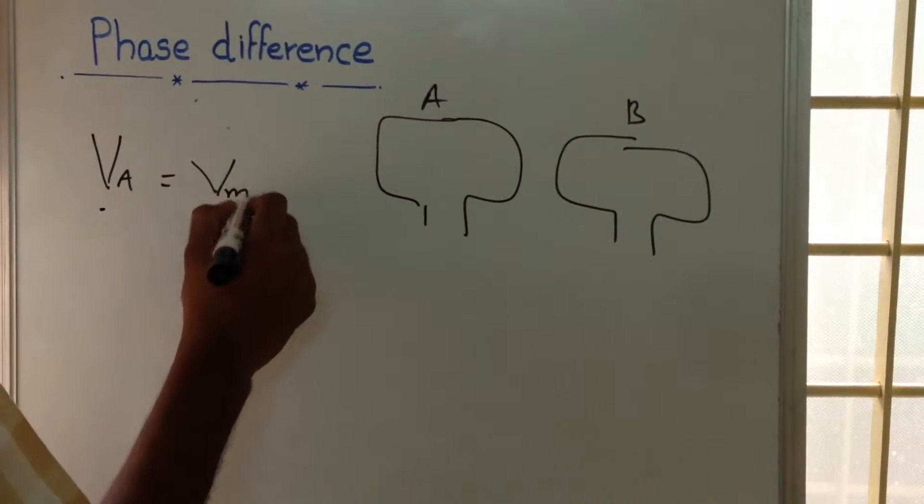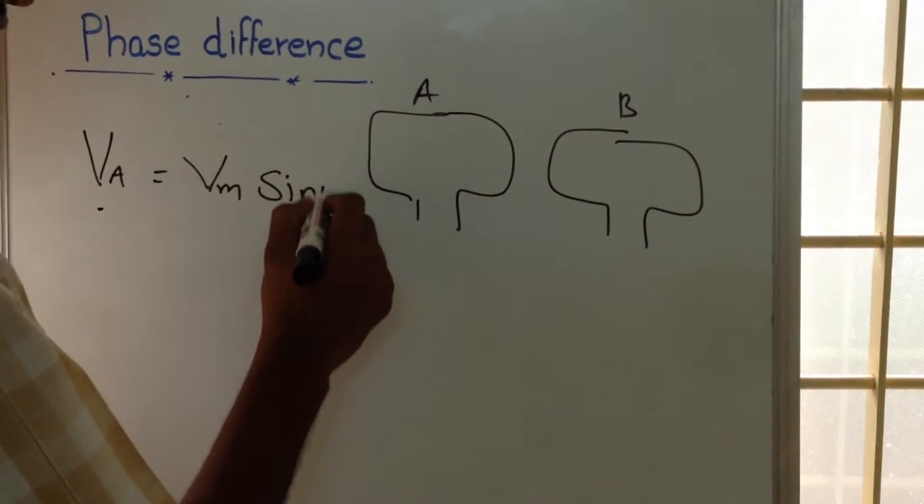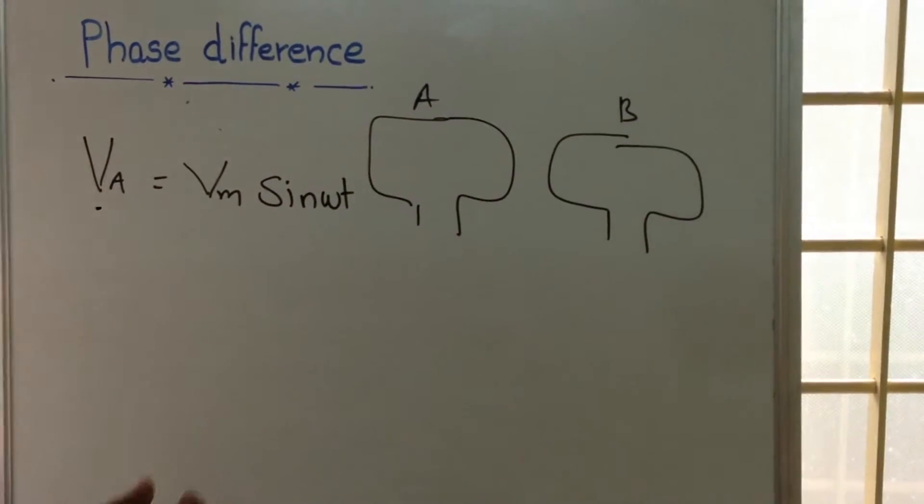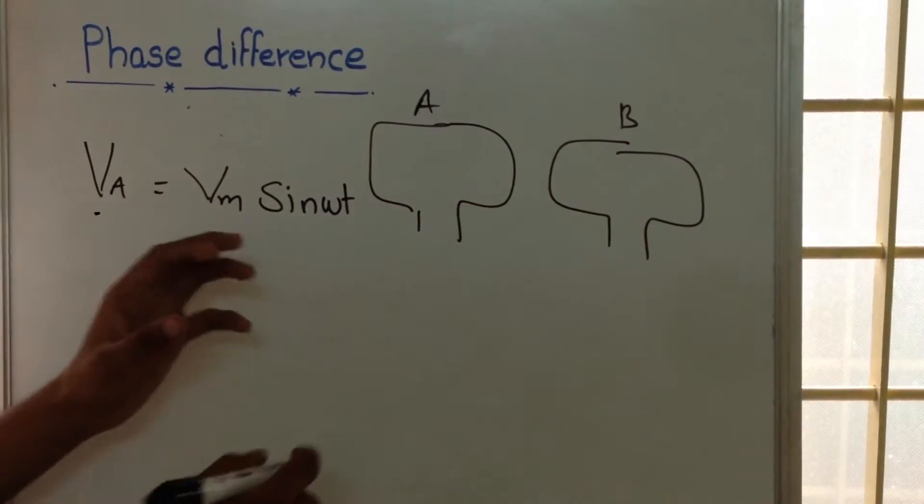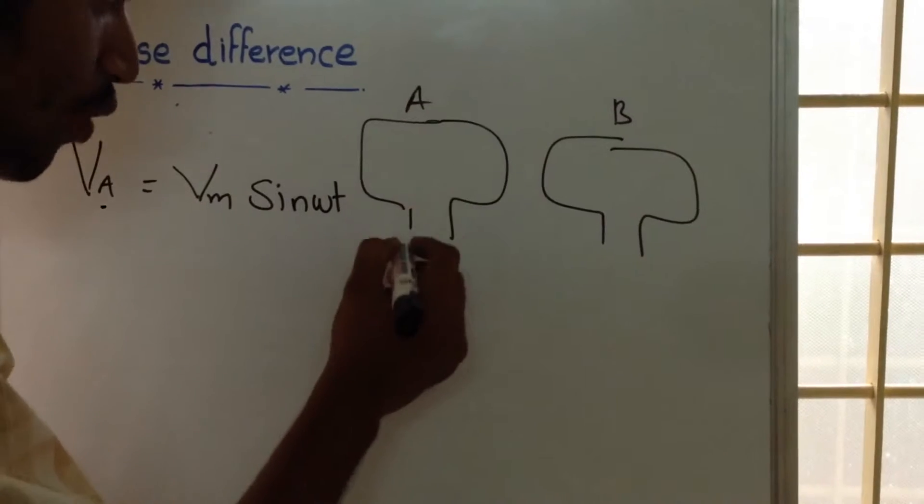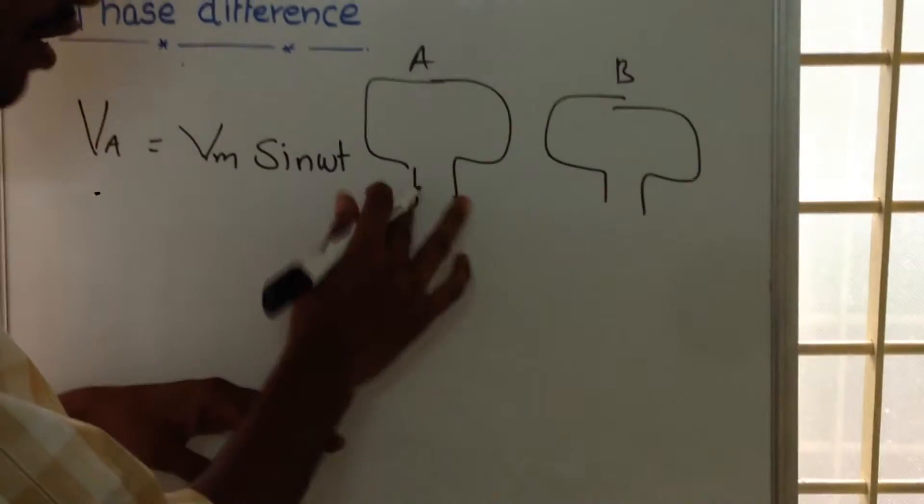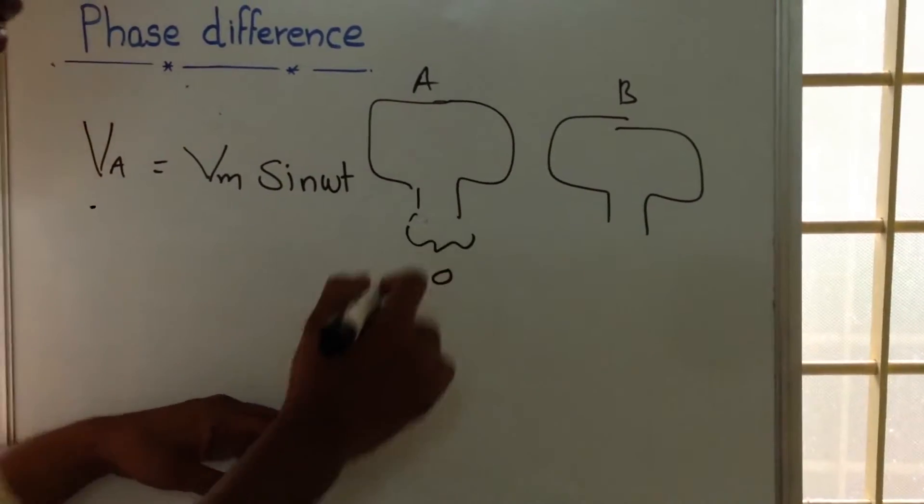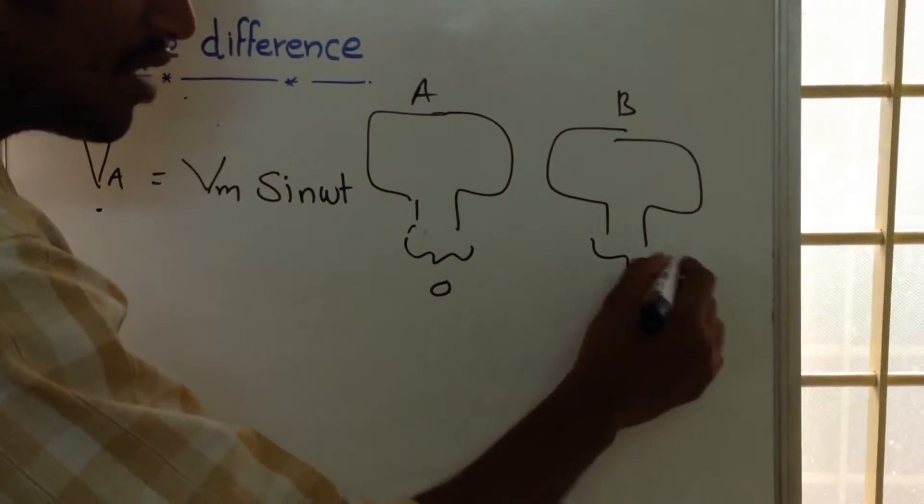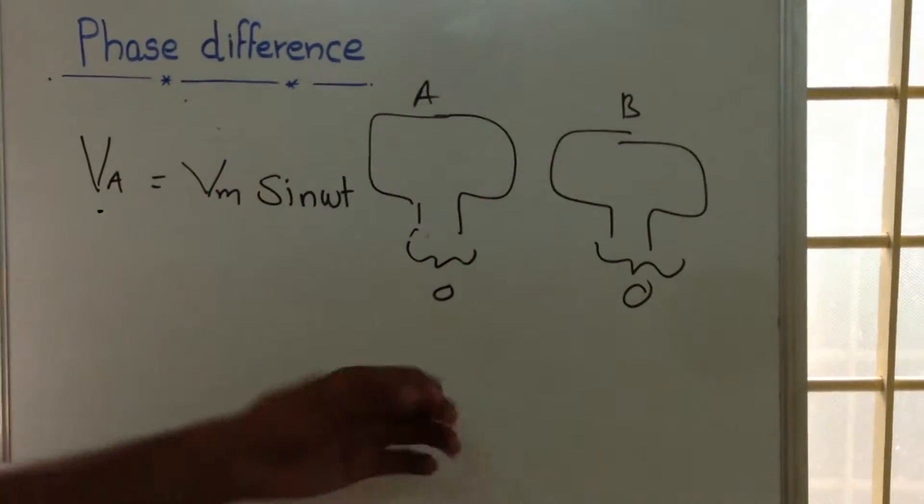VA can be represented as Vm sin(ωt). Now suppose at a particular time when the voltage across here is zero - the voltage across these two terminals is zero - and if the voltage across these two terminals is also zero, and after some time